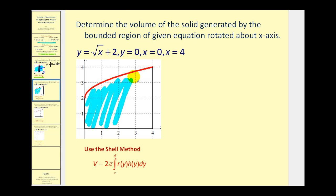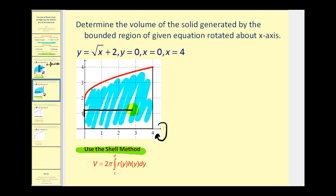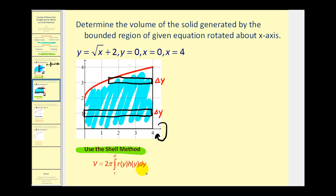This is the same problem with the same region rotated about the x-axis, but now using the shell method. The representative rectangle must be parallel to the axis of rotation. This is more involved here because if we drew a rectangle in this region, it's bounded by two vertical lines. But if we drew a rectangle above y equals two, it's bounded by the vertical line x equals four and the function. This tells us we'll need to set up and solve two different integrals. The thickness of these rectangles is delta y, which means we integrate with respect to y.